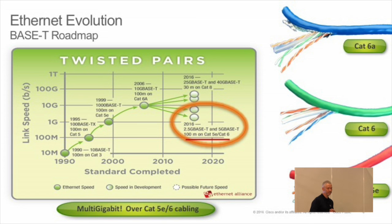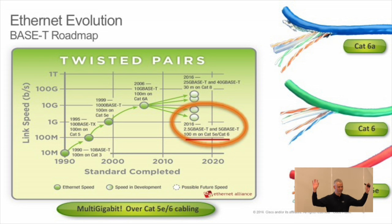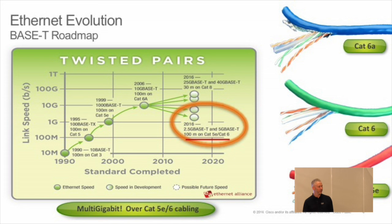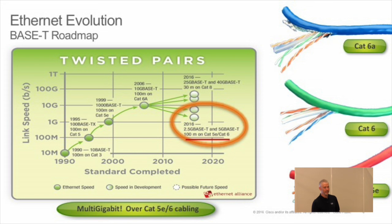I'm briefly going to put up the base-T roadmap. So, 10Base-T back in 1990. Then we went up to 100Base-T TX — there was a big argument about whether it was 100Base-T or VG Anylan — 100M on Cat3 versus 100M on Cat5. Then we did 1000Base-T in 1999. Interestingly, it was originally supposed to be Cat5, but they realized it didn't quite work, so they had to go back to 5E and make the cable better — 5E stands for 5-enhanced.